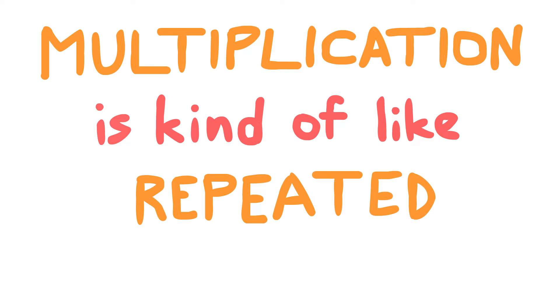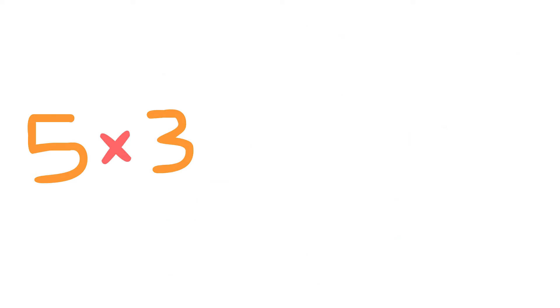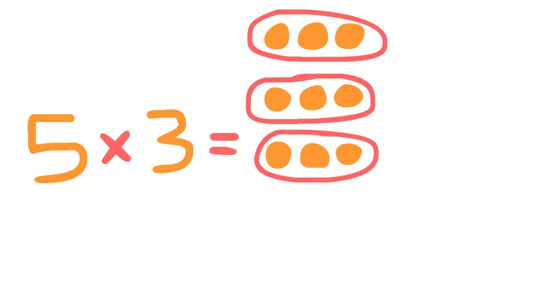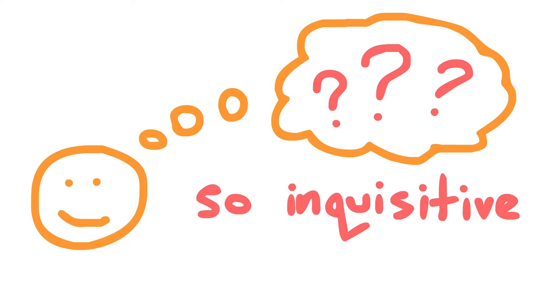Multiplication's kind of like repeated addition. 5 times 3 is 5 groups of 3 once you've added them up. Now I'm seeing you're so inquisitive.